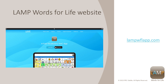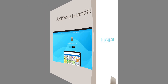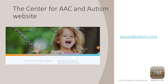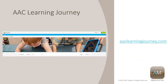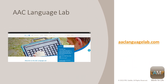To learn more about your LAMP Words for Life app, visit our LAMP Words for Life website at lampwflapp.com. You can learn more about the LAMP approach at the Center for AAC and Autism website. You can continue learning about the LAMP Words for Life app and how to implement AAC throughout your day at AAC Learning Journey, where you can enroll in live instructor-led courses and self-paced e-learning courses. Find great implementation tools and resources at aaclanguagelab.com.